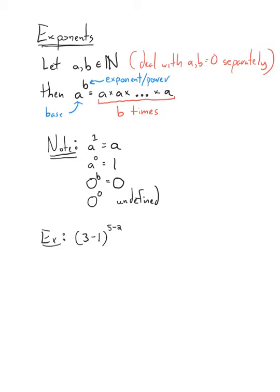Let's do a quick example. We have 2 to the power of (5 minus 2). We simplify inside the exponent first using order of operations — it's assumed that anything in your exponent has brackets around it. So 5 minus 2 is 3, giving us 2 to the 3, which is 2 times 2 times 2, and that equals 8.